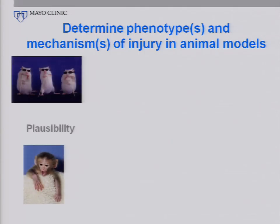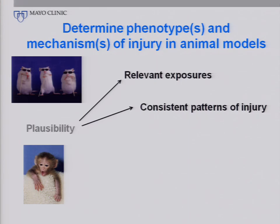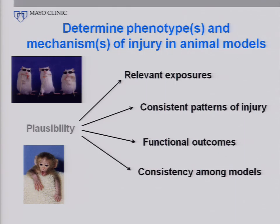In the animals, there's still a lot of work that needs to be done — this relates to plausibility in Sir Hill's formulation. We need to make sure that we have relevant exposures, and as the animal work has progressed, we're getting closer to what relevant exposures might be in children. It would be nice to see consistent patterns of injury within and between animal models. We need to make sure we're looking at functional outcomes always, to make sure that what we observe histologically is not just a histologic finding. And finally, mechanism — this is really the opportunity to look at what the mechanism of injury might be and to determine what the right strategies for amelioration might be.